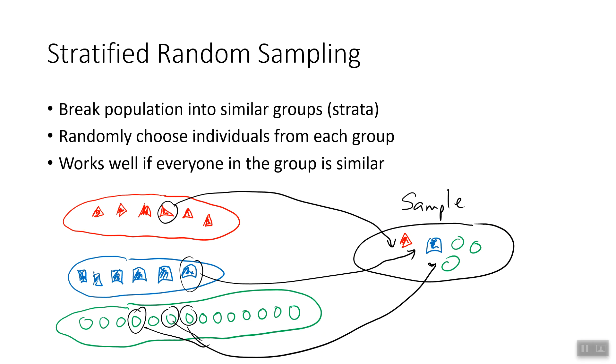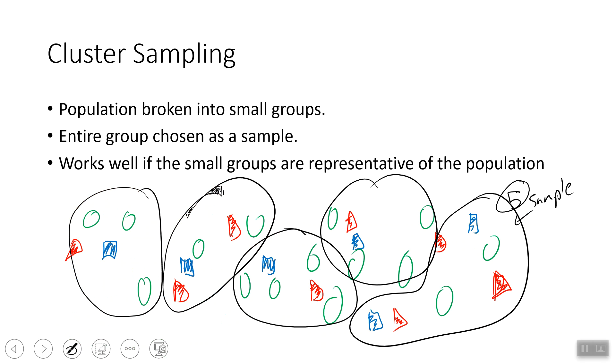If they're different, then you're not getting a good group there. And then in cluster sampling, you've got different groups. Each group is made up differently and your entire group becomes the sample in there. So that's kind of a rough view of the difference between the two. I hope that kind of helps your understanding.